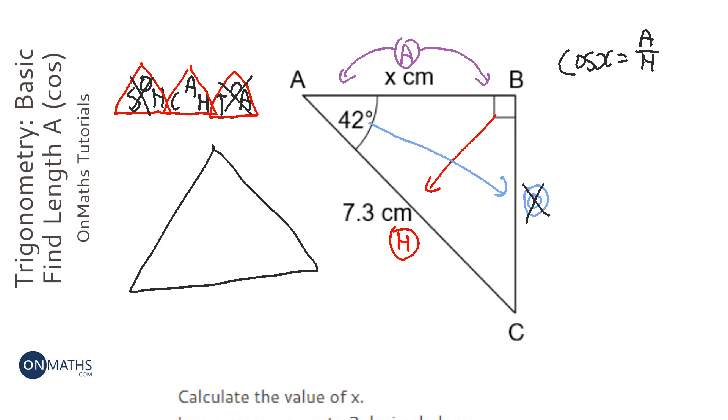With this triangle, instead of C you write C stands for cos the angle. So the angle is 42, it's always the angle. Then we're going to put A at the top. Now A is just X in this question. And we're going to put 7.3, so the hypotenuse at the bottom.